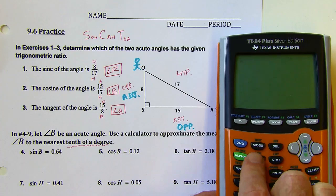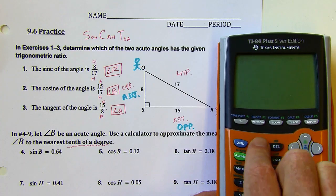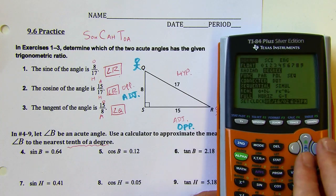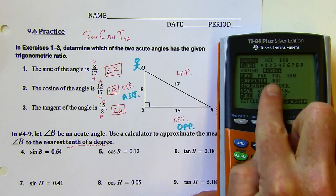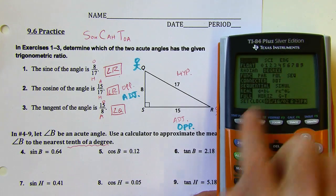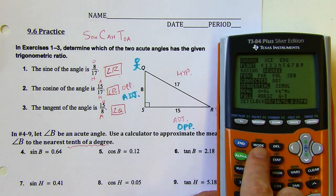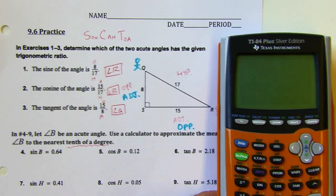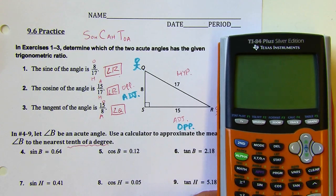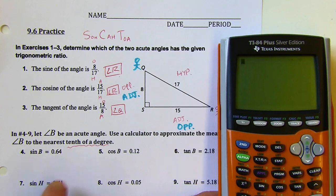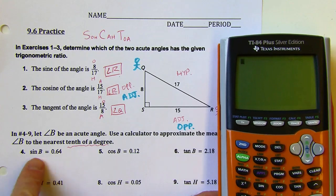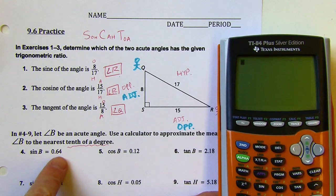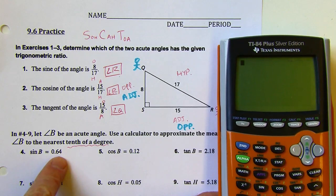For my calculator, I'm going to hit MODE, and I can see this is already in degrees, so I'm good to go. I'll hit second then MODE to quit back to the home screen, or you can just turn it off and on again. I'm not just going to put in sine of 0.64 — that's not what this is asking.